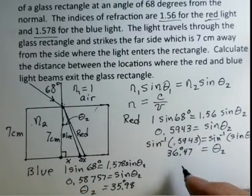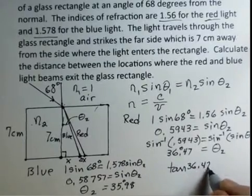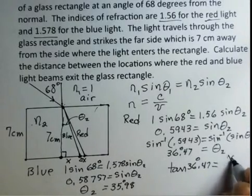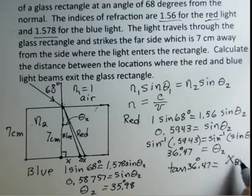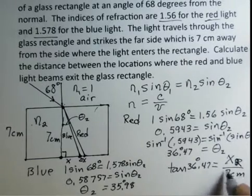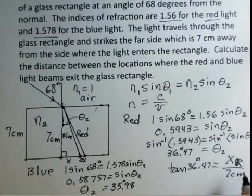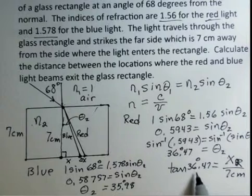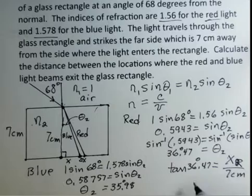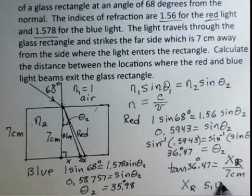So for the case of the red light, tangent of 36.47 degrees is equal to opposite X sub R for red, divided by the 7 centimeters. I don't need to change this to meters. We'll get X in units of centimeters. So take tangent of 36.47 degrees, multiply by 7, and the X for the red light, 5.174 centimeters.